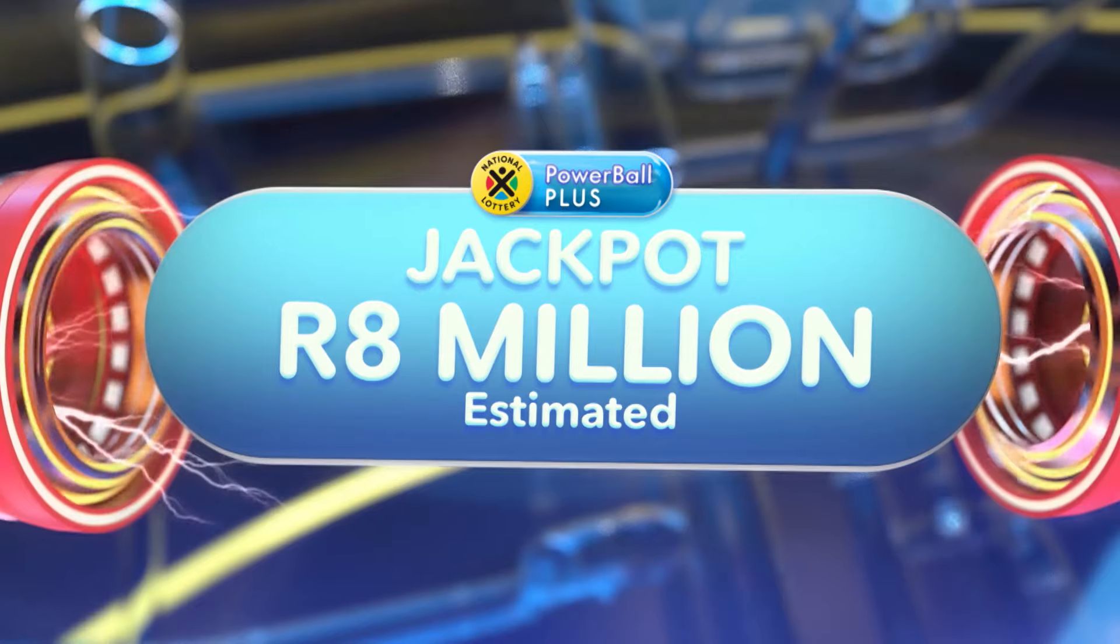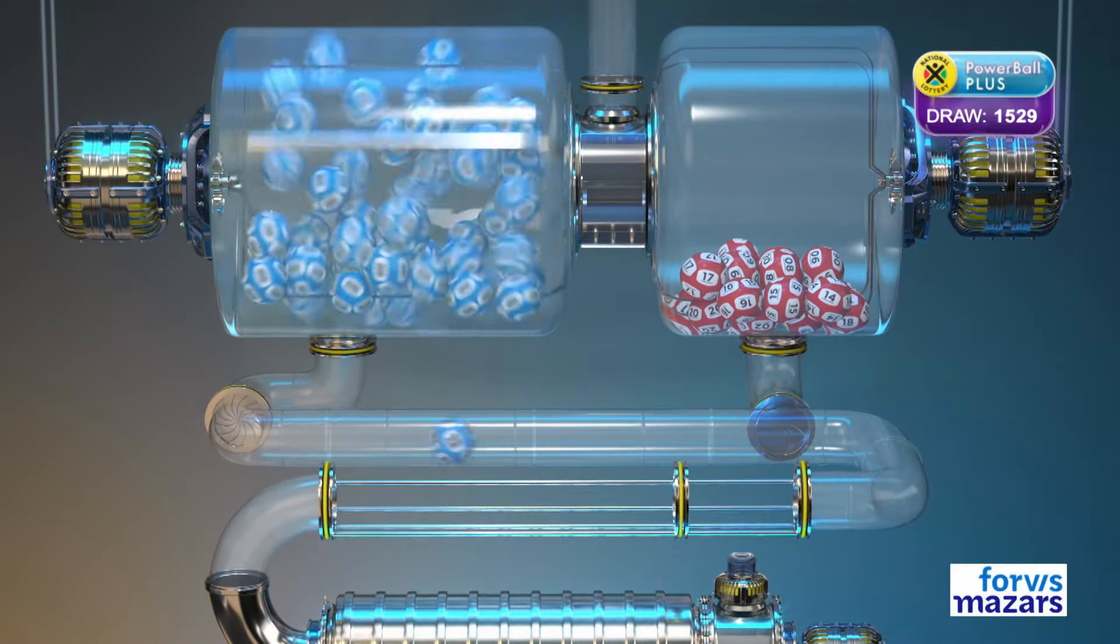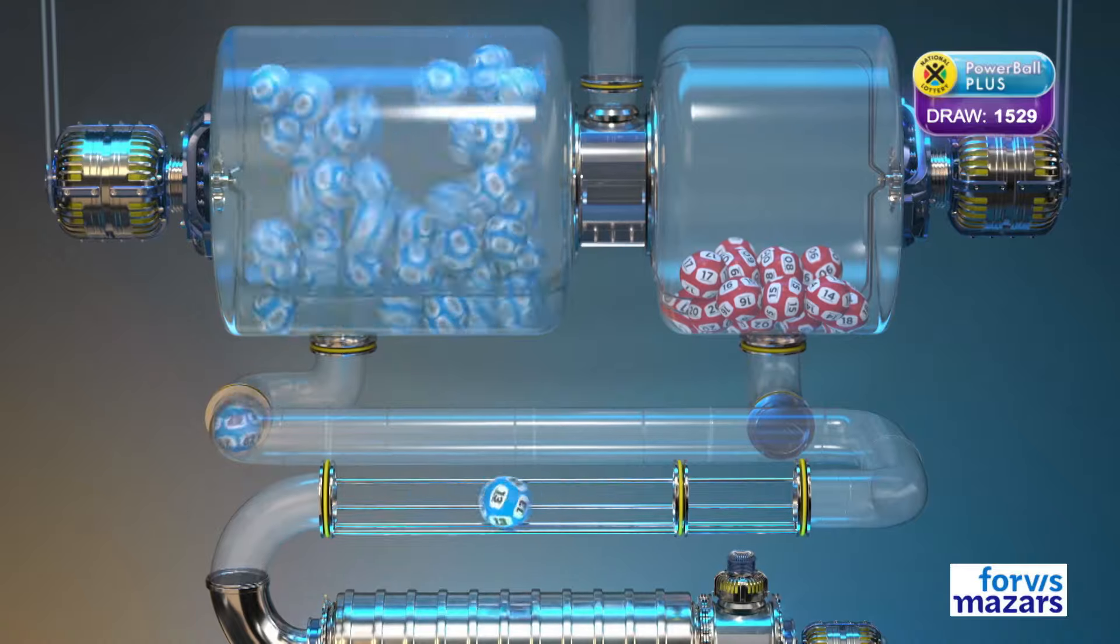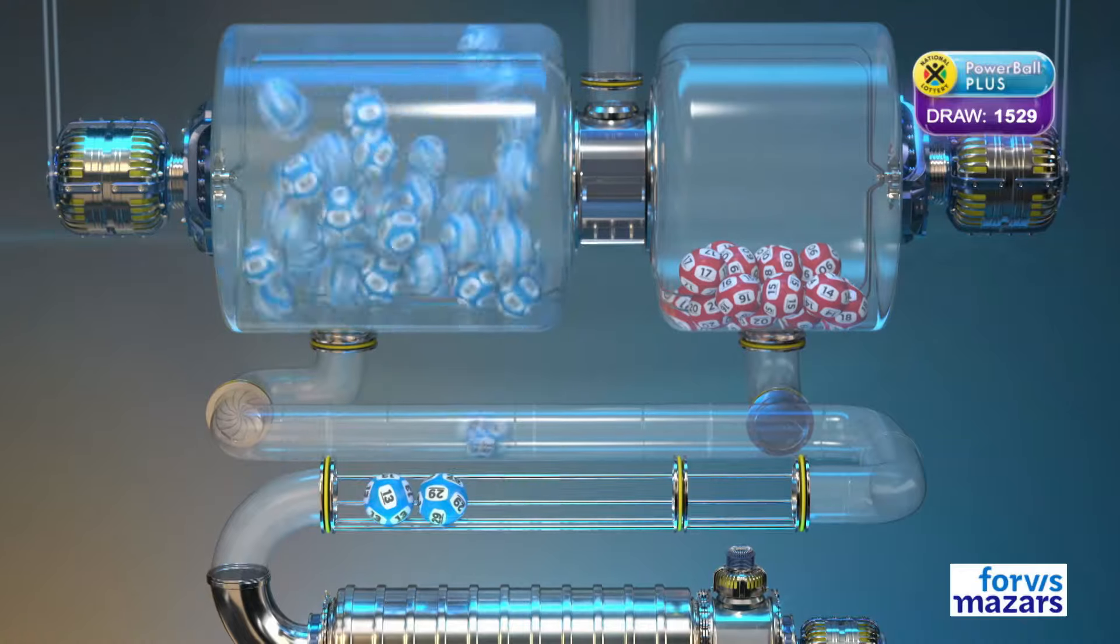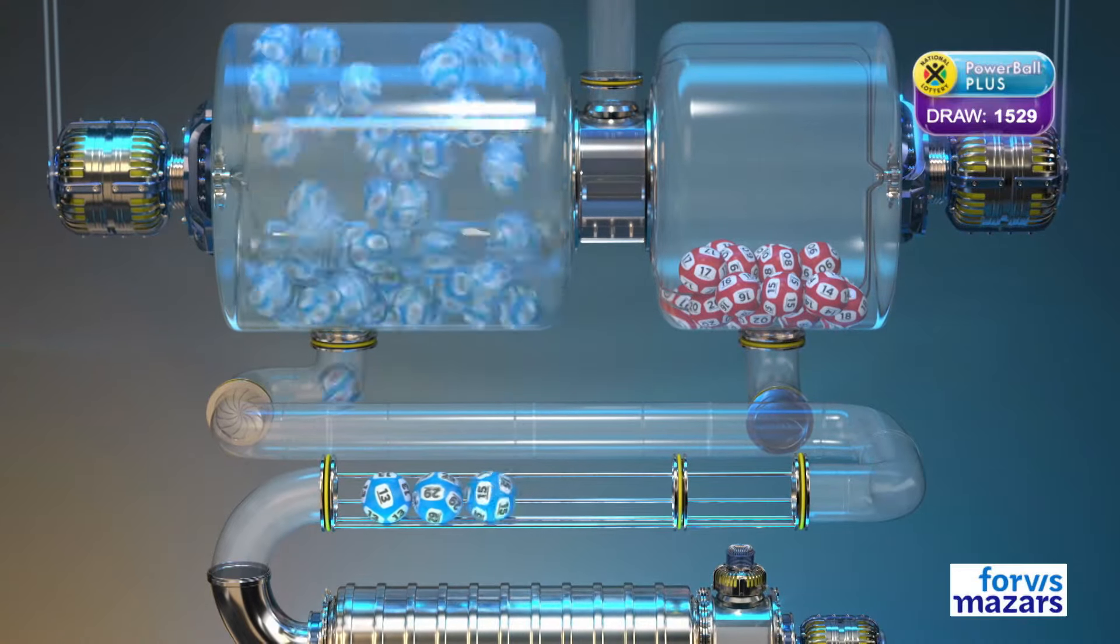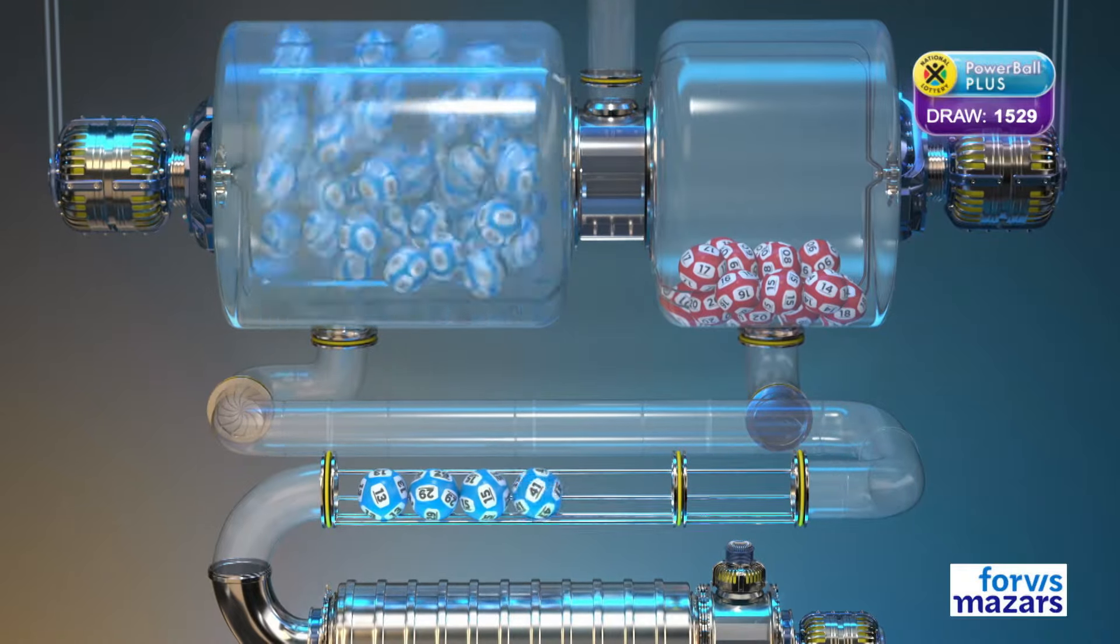The Powerball Plus numbers are: Thirty, Twenty-nine, Thirty-nine, Fifteen, Forty-one.